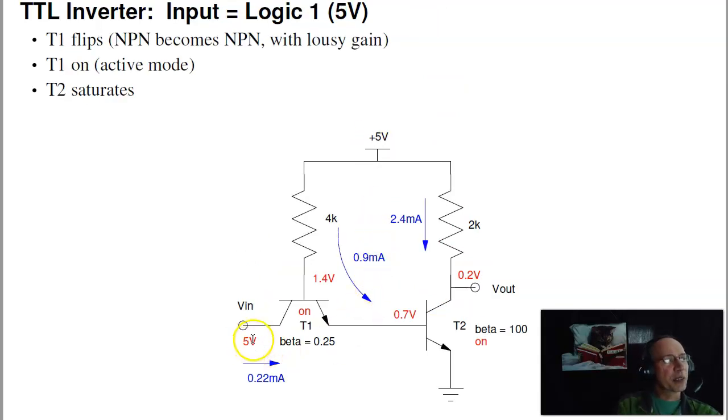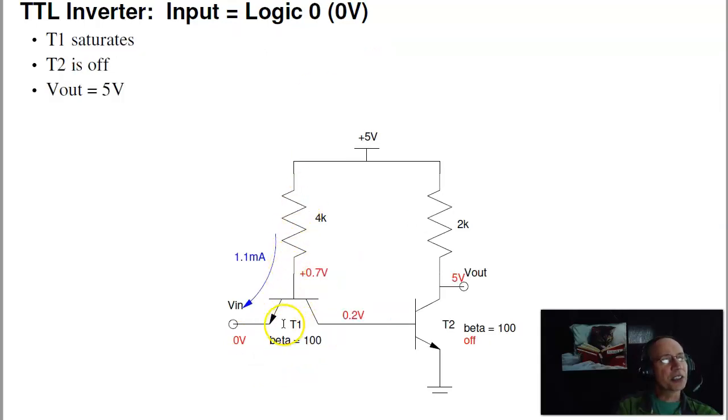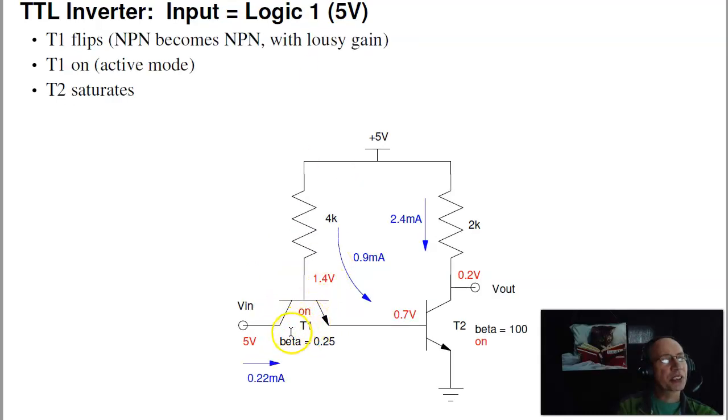The other case is if the input has 5 volts. This is where it gets kind of tricky. If you notice, this is an NPN device. Current going left, current going this way, the gain is 100. I can dope the transistor so that going the other way, this is still NPN. That's still a transistor. But now the doping makes the beta, or the current gain, really, really bad, like 0.25.